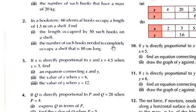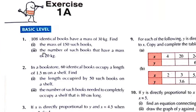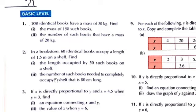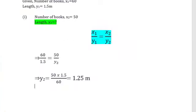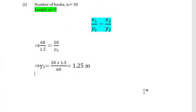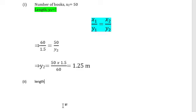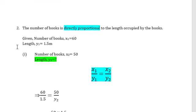Now come to the second part of the question: the number of such books needed to completely occupy a shelf that is 80 centimeter long. Here 80 centimeter is given, so you have to convert the unit because the original length was given in meter — 1.5 meter. The length y2 is 80 centimeter.